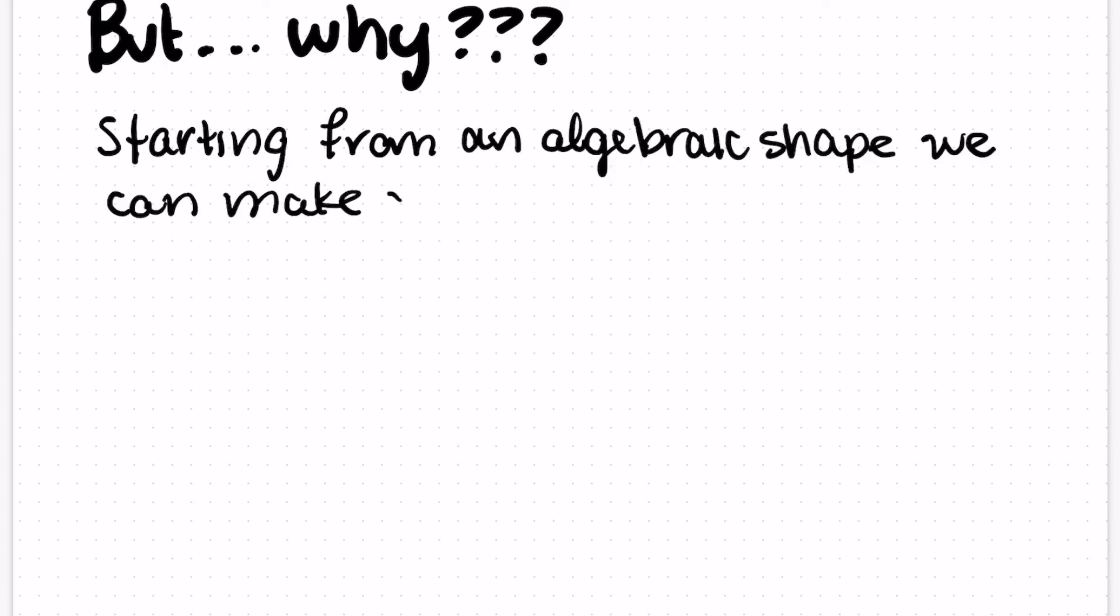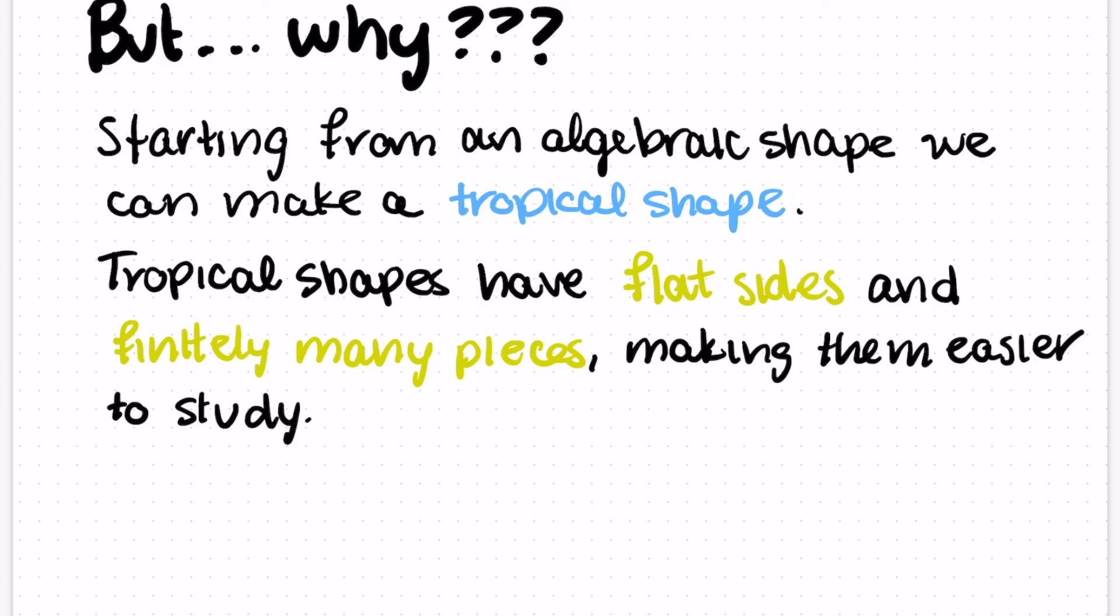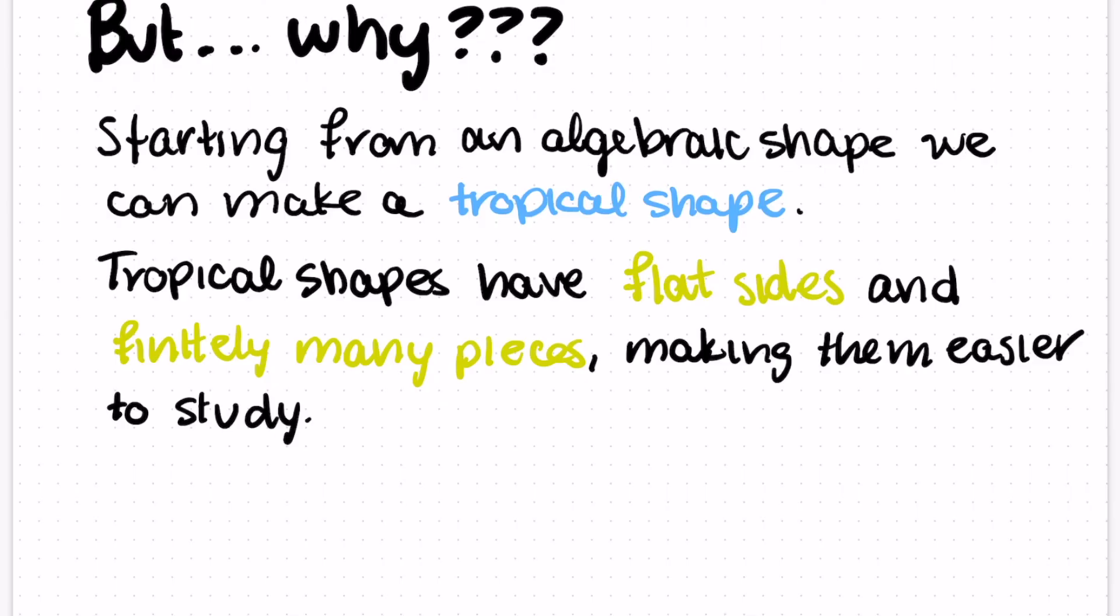So you might be wondering why do we do this? It turns out that starting from an algebraic shape you can actually make a tropical shape. In this process you actually preserve some meaningful information about the algebraic shape. But on the other hand tropical shapes have flat sides and finitely many pieces which makes them simpler to study in many cases. Especially if what you want to know about your algebraic shape is some finite piece of information. Often that is easier to detect from the tropical shape than it is from the algebraic shape. And this ends up being a really powerful tool.